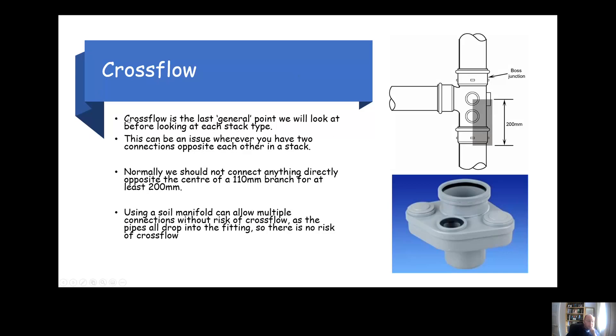We also need to be aware of cross flow. Cross flow is essentially when you have water flowing into a stack directly opposite each other. So two connections directly opposite each other can be subject to cross flow. That means that if the water from one appliance as it flows in could affect the other appliance, the water kind of pushes into the outlet potentially, which can cause pressure fluctuations which can cause trap seal loss.